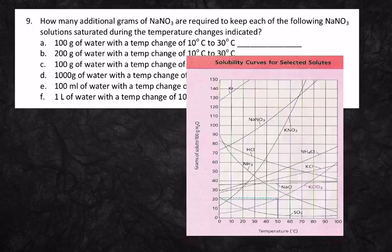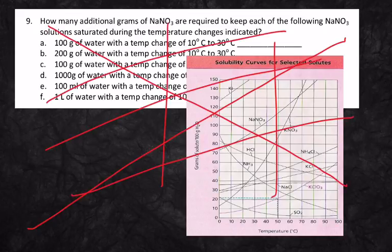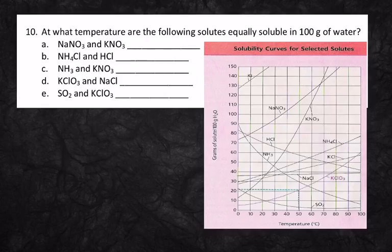Okay, let's do question 9. In fact, no, we're not going to do question 9. I want you guys to skip question 9. I'm going to be nice to you. But I feel like you guys can do question number 10. So question number 10 says, At what temperature are the following solutes equally soluble at 100 grams or 100 milliliters of water? So let's find NaNO3 and KNO3.